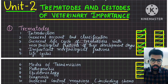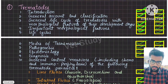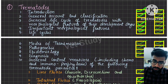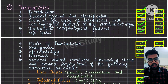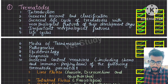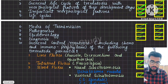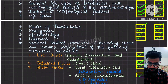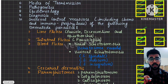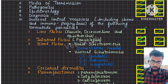We also have general control measures against parasites — control measures are also very important. Now, Unit 2 is Trematodes and Cestodes. In trematodes, the important topics are introduction, general account and classification, and the general life cycle of trematodes with morphological features and developmental stages. This is exactly the question from our externals, so read this topic well.